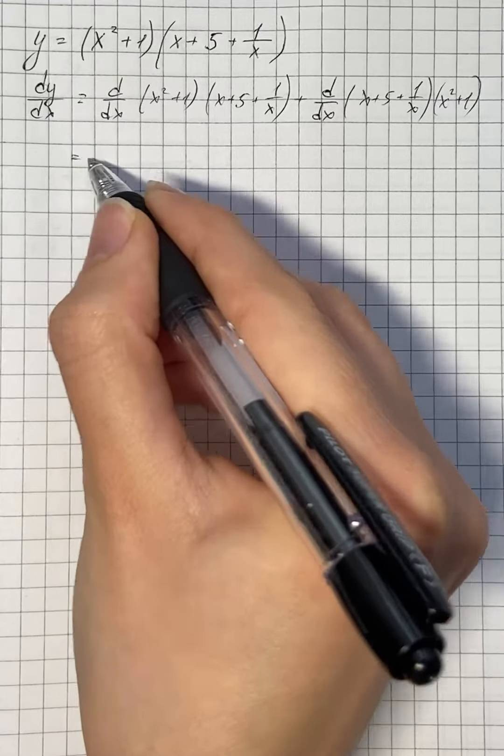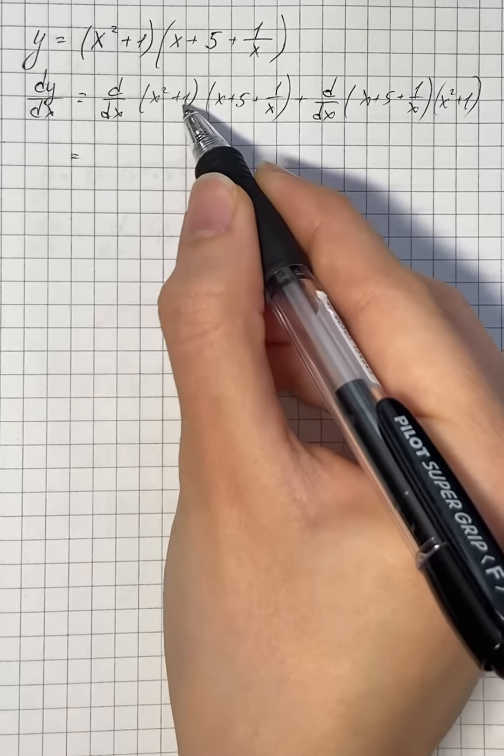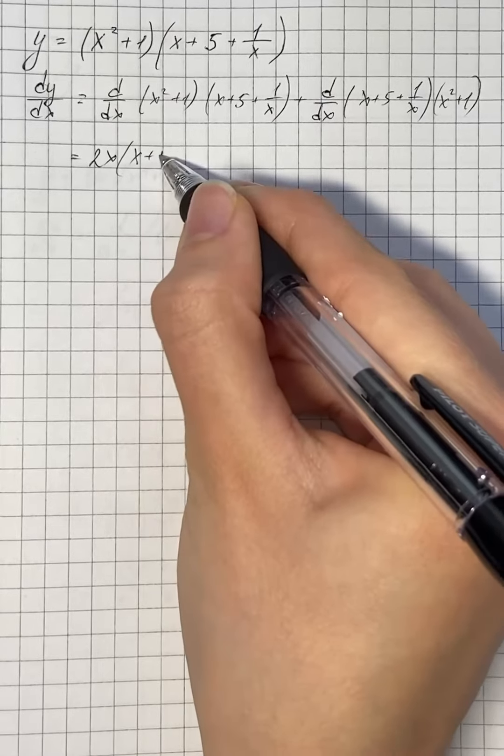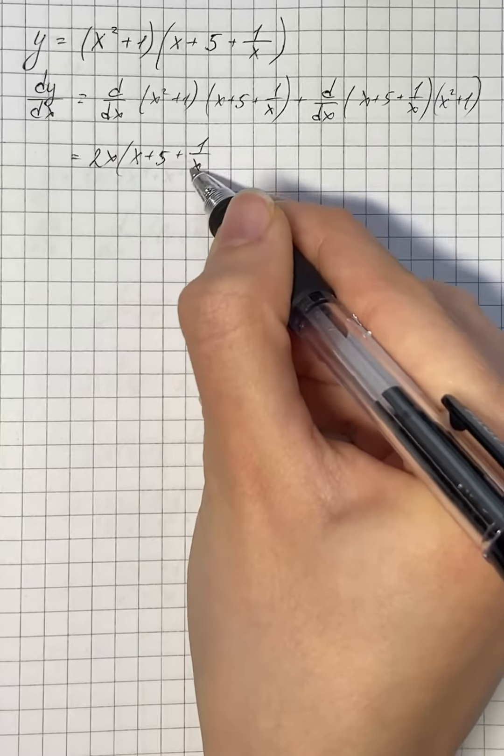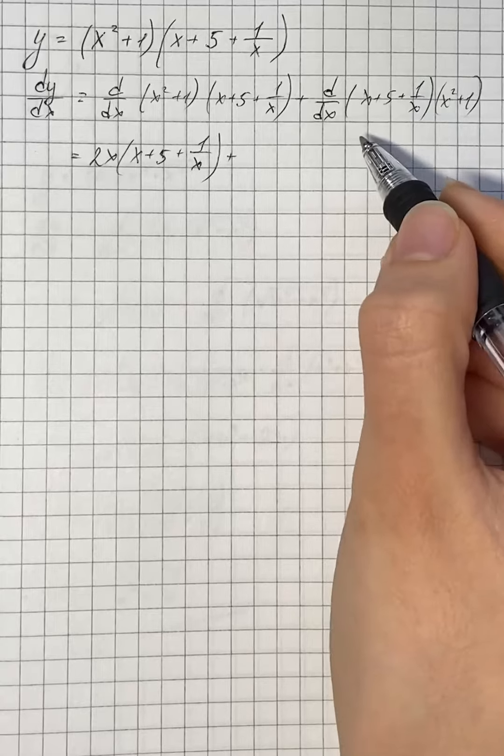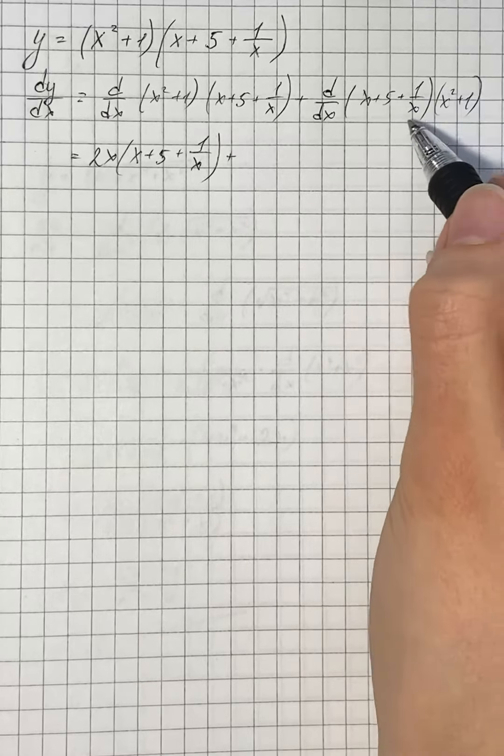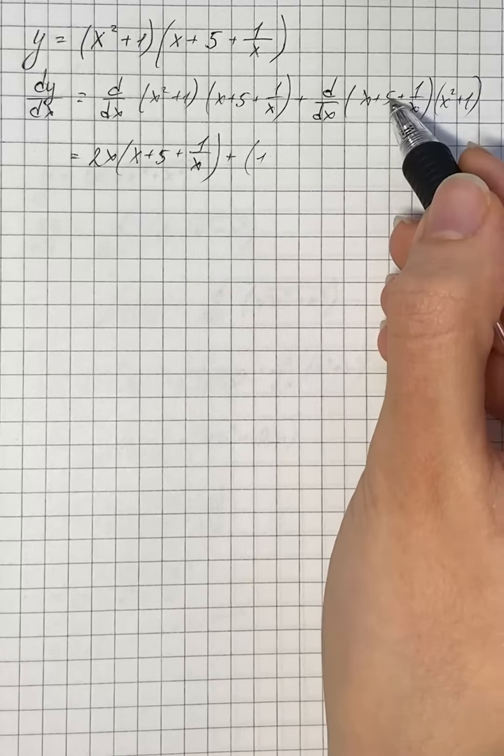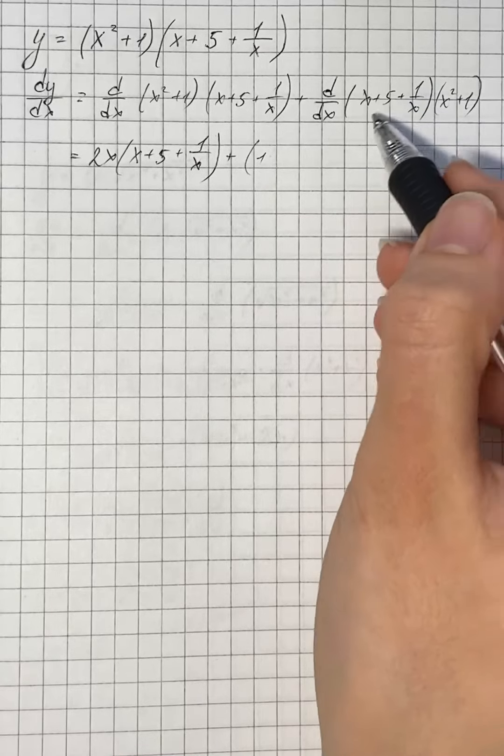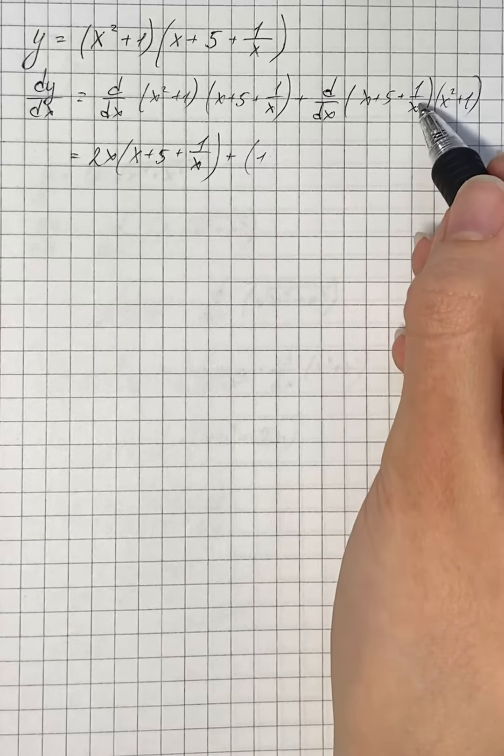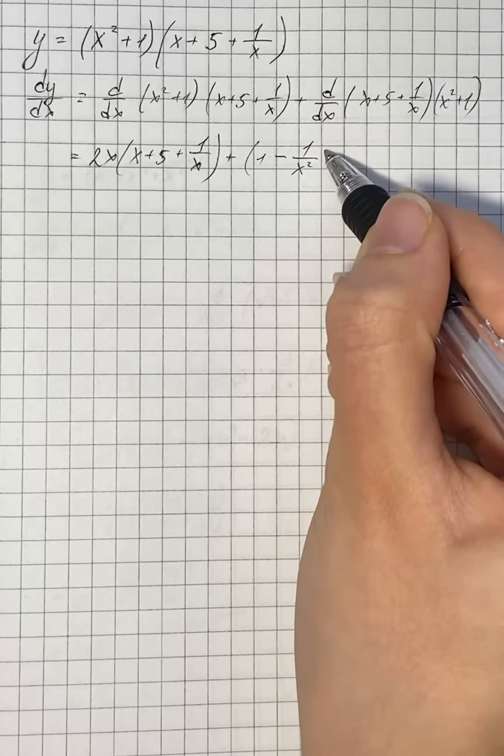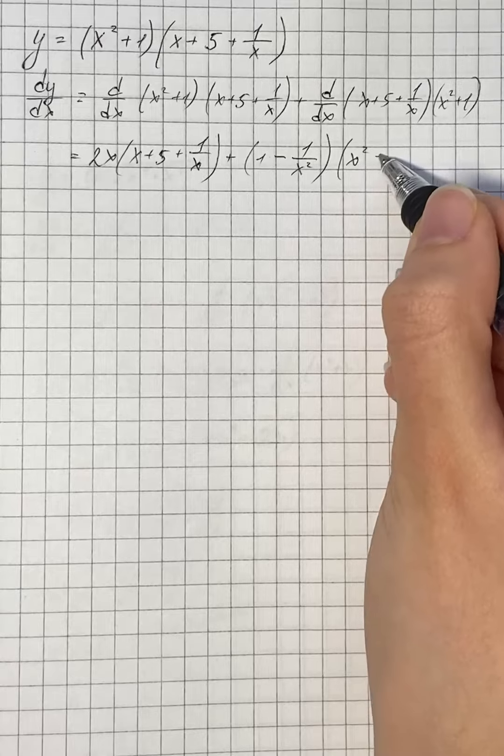So that's going to be derivative of x squared plus 1 going to be just 2x times x plus 5 plus 1 over x, and derivative of x going to be 1, derivative of 5 which is constant going to be 0, and derivative of 1 over x going to be negative 1 over x squared times x squared plus 1.